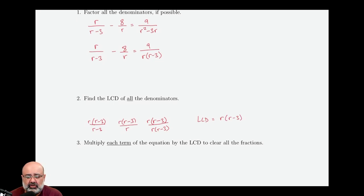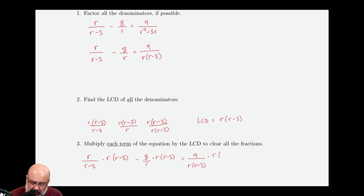Now we have to multiply each term of the equation by the LCD to clear all the fractions out. So we have to multiply that by r times r minus three, minus eight over r times r times r minus three, equals nine over r times r minus three times r times r minus three. So I've taken each of the terms here, and I multiply this guy by r times r minus three, multiply this guy by r times r minus three, and multiply this guy by r times r minus three.